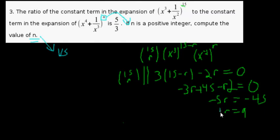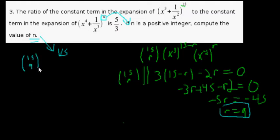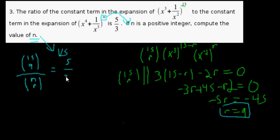So we got our first step: we know at least something about it. The constant term from the first expression is fifteen choose nine. Now, divided by some unknown constant term from the second expression — we don't know what n is — so divided by n choose some r value that makes it zero, and this is going to equal five over three. Maybe we can do the same thing to the second expression to find a relationship between n and r.